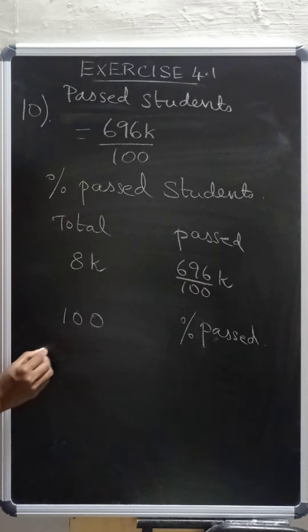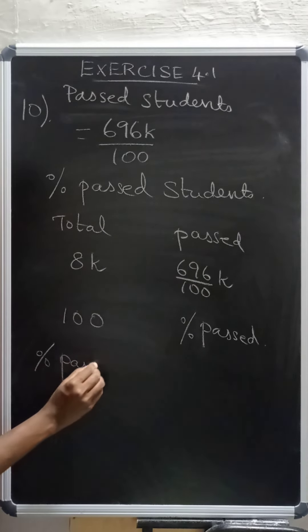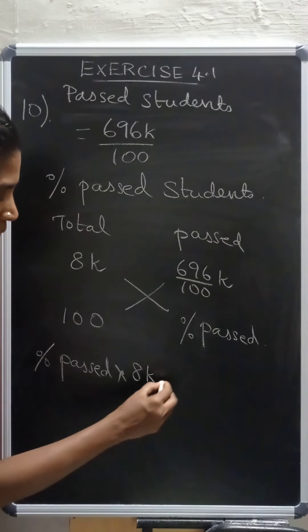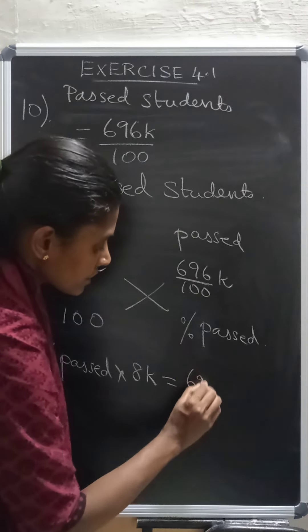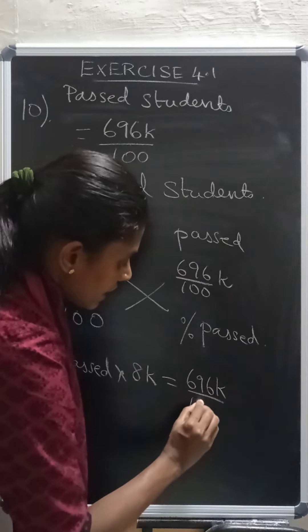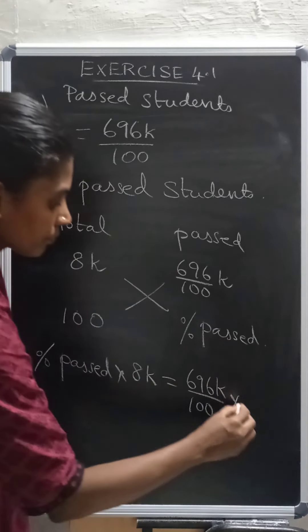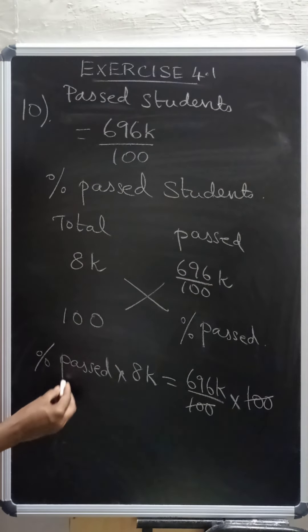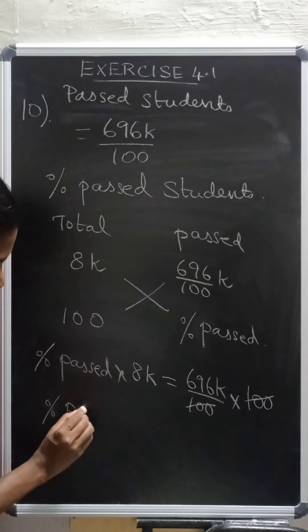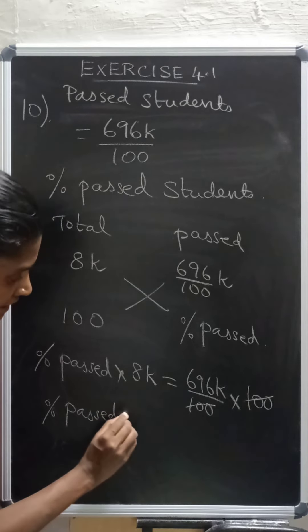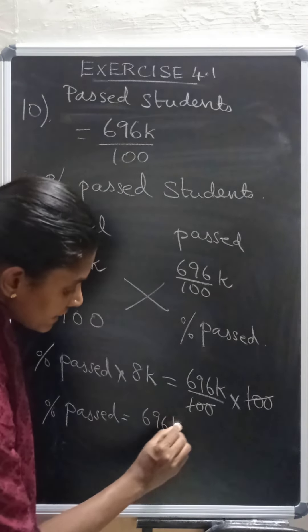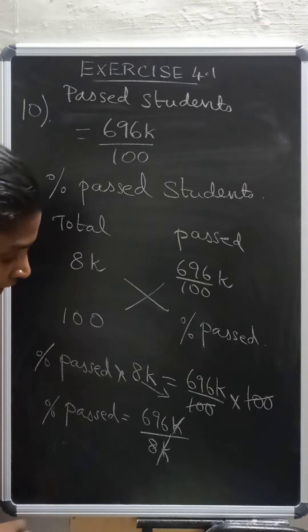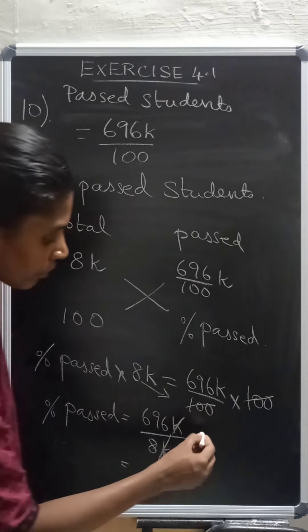So now percentage passed into 8k. Now I am doing cross multiply. Is equal to 696k by 100 into 100. This 100 and 100 gets cancelled. Now percentage passed is equal to 696k by 8k. K and k gets cancelled. Now on dividing.